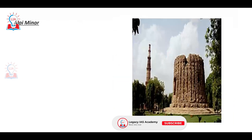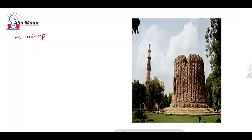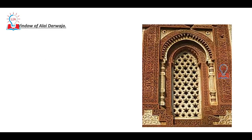Next is the Alai Minar — this is incomplete; they were not able to complete it. Next, this is the window of the Alai Darwaza. Look at the intricate details and the markings, especially look at this particular structure.